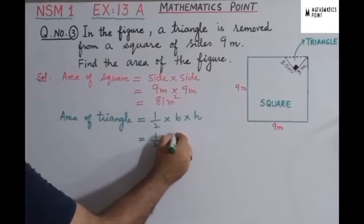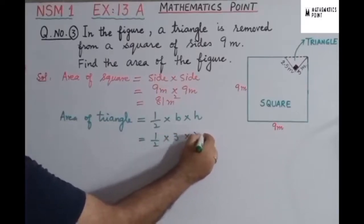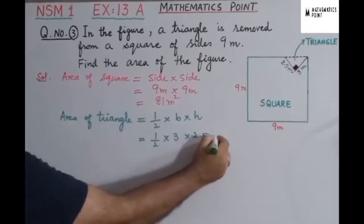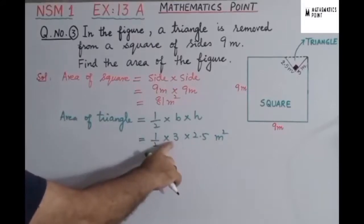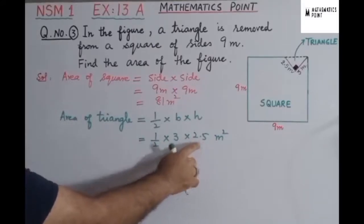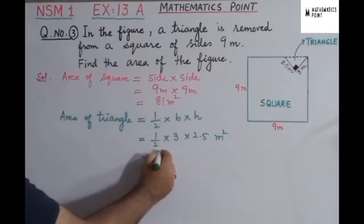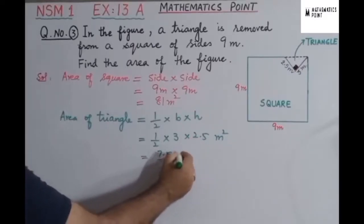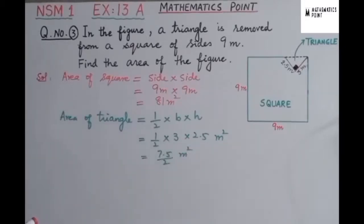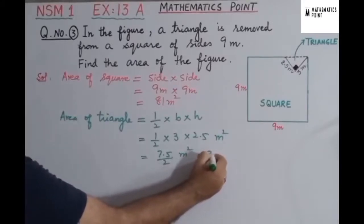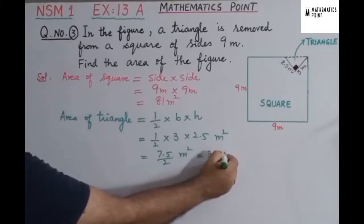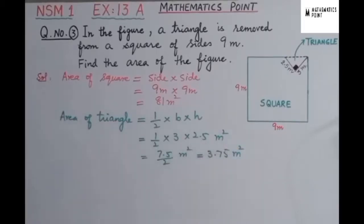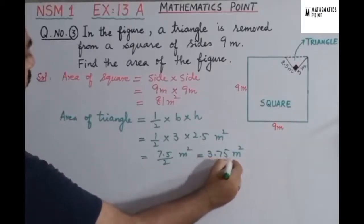Putting in the values: ½ × 3 meters × 2.5 meters. When we multiply meter × meter we get meter squared. 1 × 3 = 3, and 3 × 2.5 = 7.5, divided by 2 = 3.75 meters squared. So this is the area of the triangle.